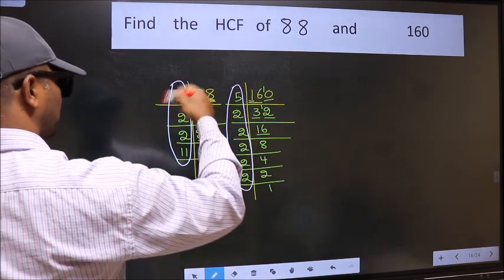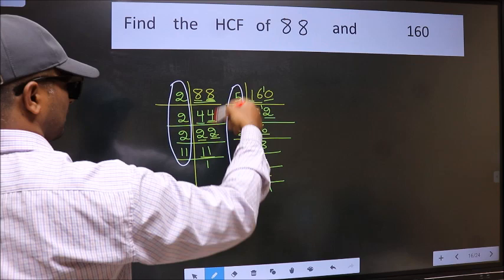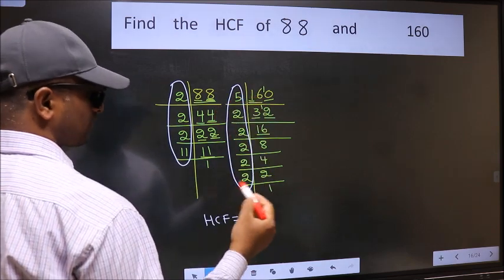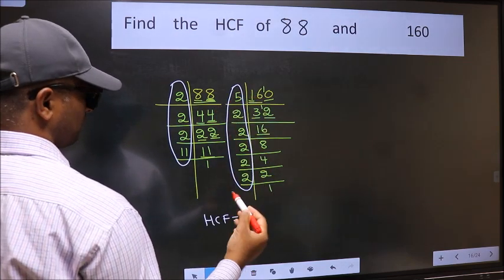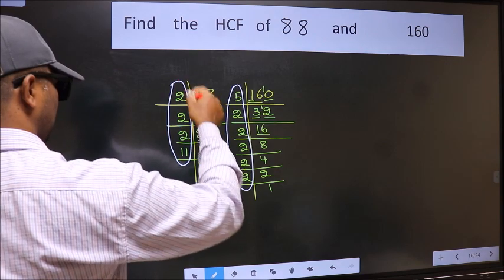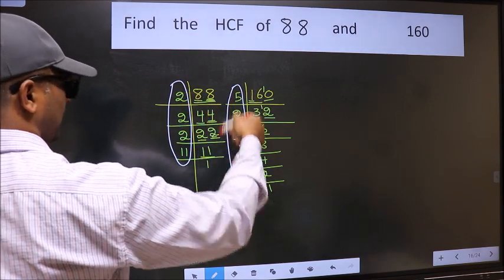Here and here. So now, let us find the numbers which should be present here and here.